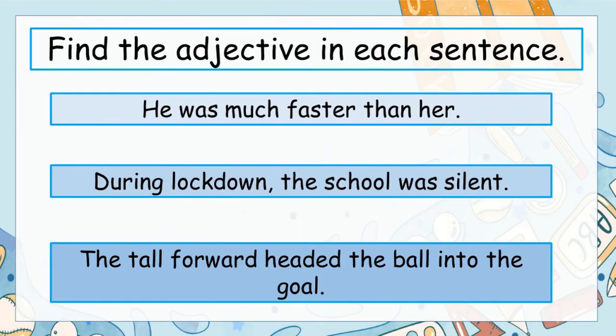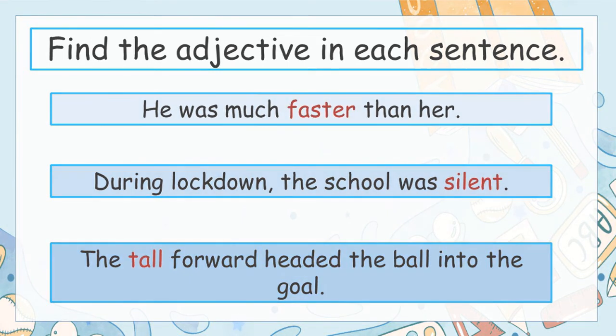Now that we know what adjectives are, let's see if we can identify them in sentences. Here are three sentences — there is one adjective in each. Pause the video and see if you can find the adjective. Remember, an adjective describes a noun. The adjective in the first sentence is faster, because it tells us more about the boy. The second sentence's adjective is silent, because it tells us more about the school. And in the last sentence, the adjective is tall, because it tells us more about the forward.